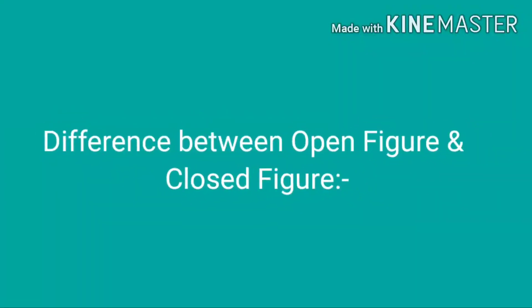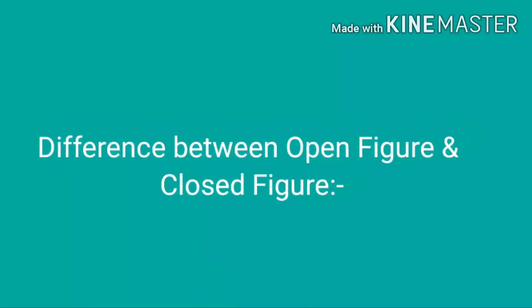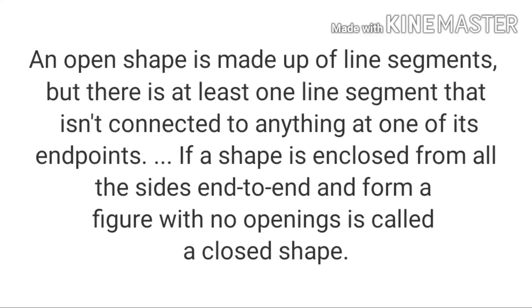Now the difference between open figure and closed figure. An open shape is made up of line segments, but there is at least one line segment that isn't connected to anything at one of its end points. If a shape is enclosed from all sides end to end and forms a figure with no openings, it is called a closed figure. So, an open figure does not end on the starting point, but a closed figure ends on the same starting point.